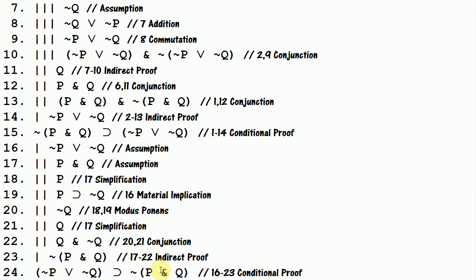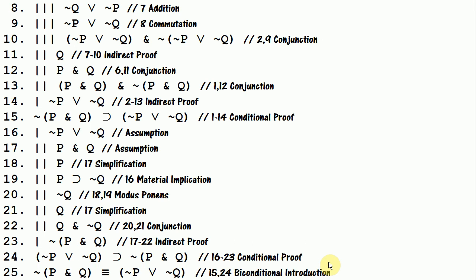And that was what I was going after. So now I can finish this conditional proof and get: if not p or not q, then the negation of p and q. And now that I have both conditionals, I can use biconditional introduction to get the biconditional I was trying to prove, which is: the negation of p and q is equivalent to not p or not q.